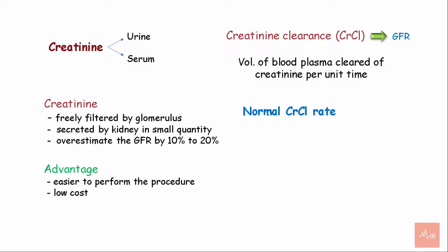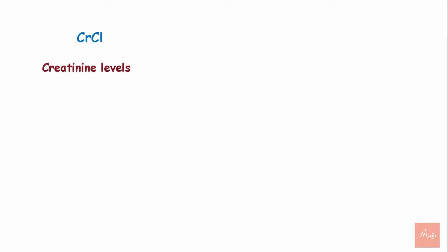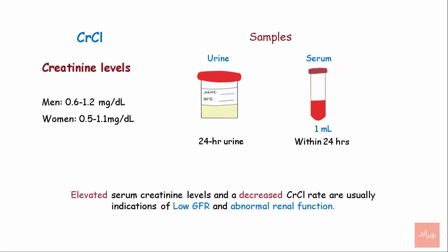The normal creatinine clearance rate is 100–150 ml per minute for males and 100–130 ml per minute for females. Creatinine clearance is assessed from the amount of creatinine excreted in a 24-hour urine collection and a single measurement of serum creatinine. Creatinine levels for men are 0.6 to 1.2 mg per deciliter and for women 0.5 to 1.1 mg per deciliter. Elevated creatinine levels and a decreased creatinine clearance rate are usually indications of low GFR and abnormal renal function.